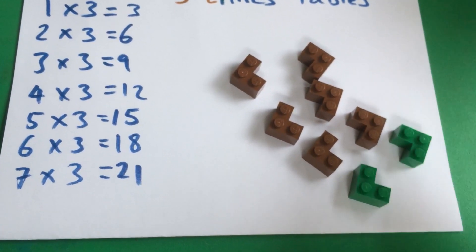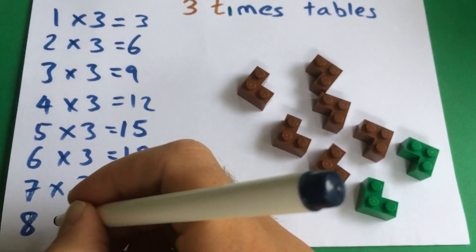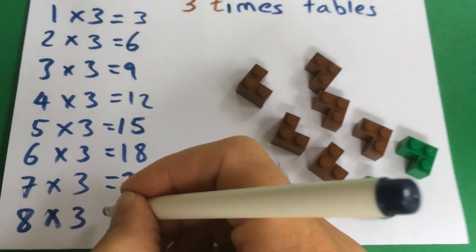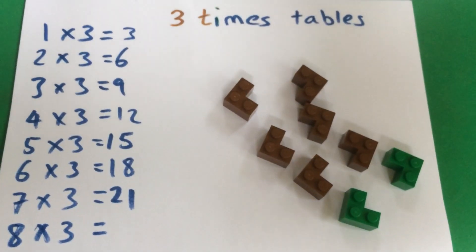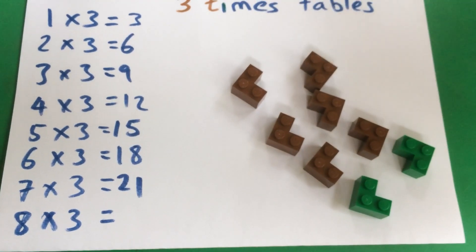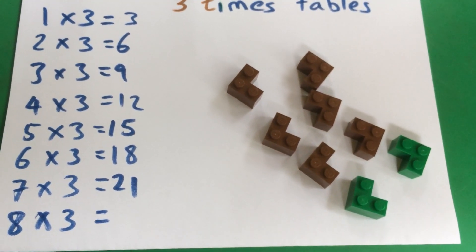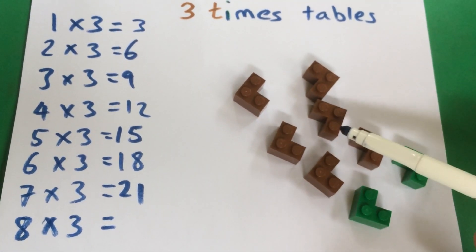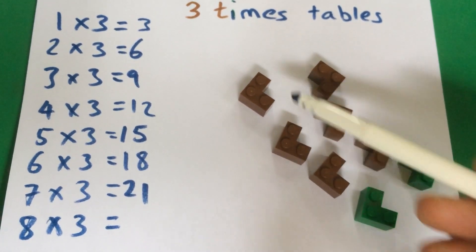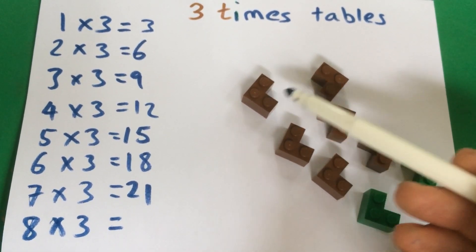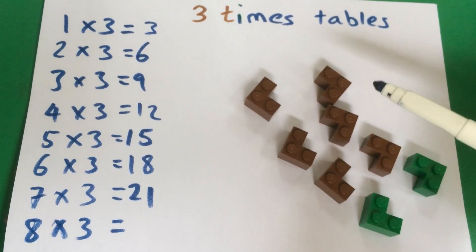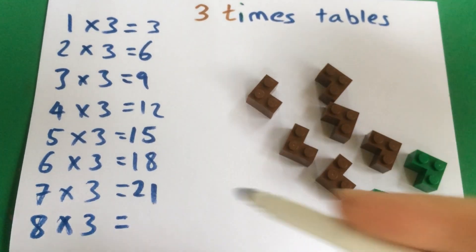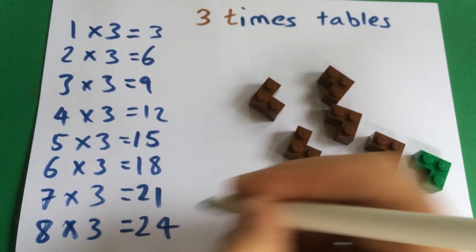And let's just do one more to make a nice and even lot of 3 harmonies, 8 lots of 3. 1, 2, 3, 4, 5, 6, 7, 8, 9, 10, 11, 12, 13, 14, 15, 16, 17, 18, 19, 20, 21, 22, 23, 24. 24. There we go.